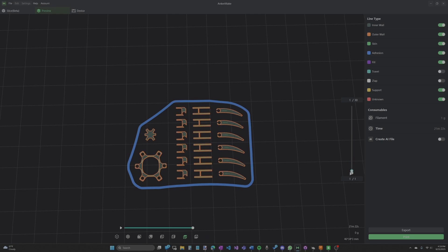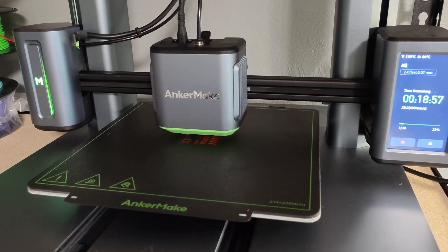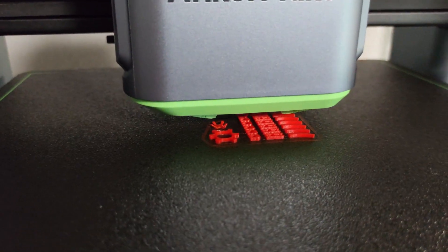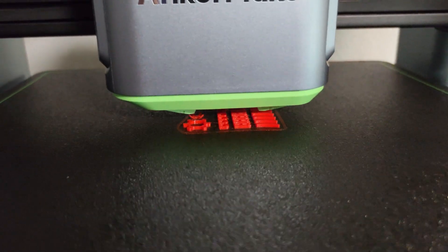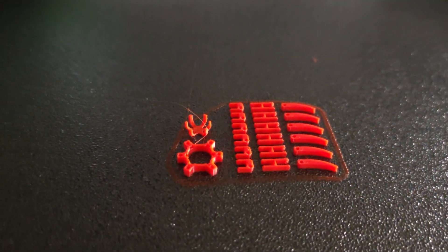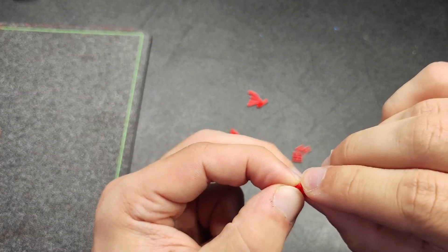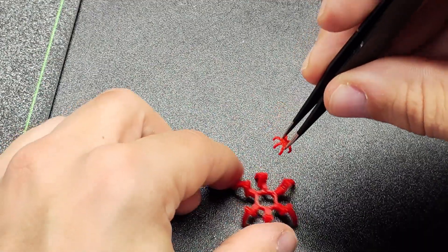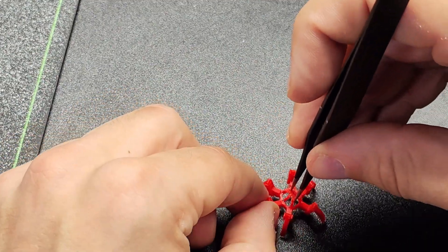The M5 with the 0.2mm nozzle was actually able to print it. Not only did it successfully print, but all the parts snapped together fine. I was able to assemble it without any issues. Although the roll cage was so small I literally needed tweezers to put it on.